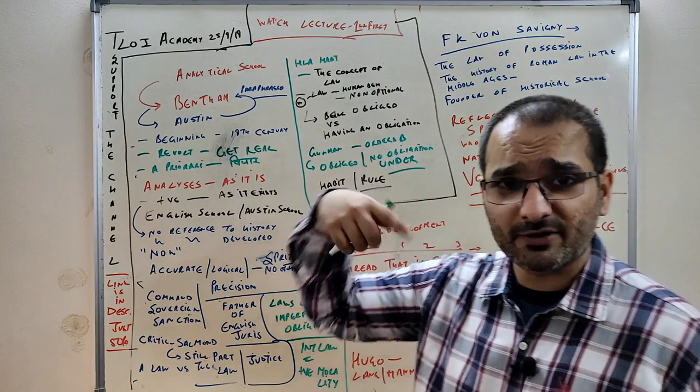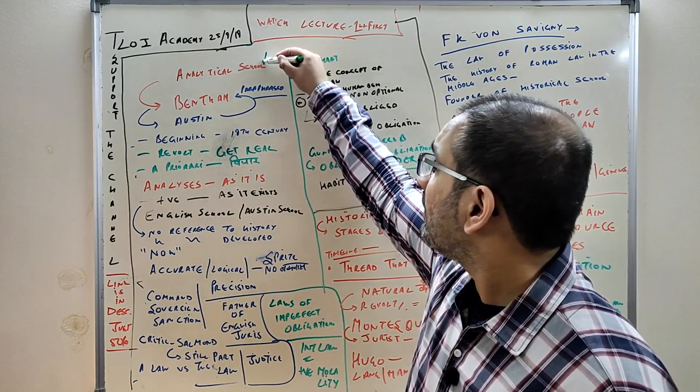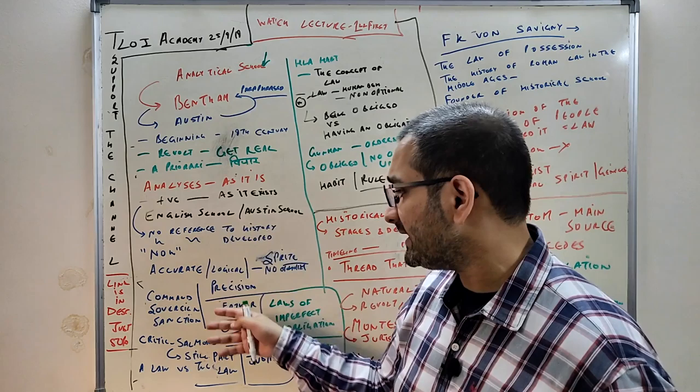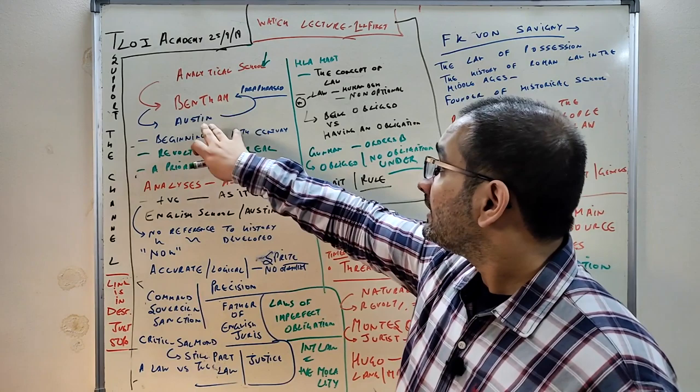Welcome to another lecture on jurisprudence. If you haven't watched parts one and two where the introduction and Mr. Austin were covered, please do so. The analytical school, which we have already covered, didn't give us much detail, so we'll go into it a bit more so you have keywords to expand on in your answers.